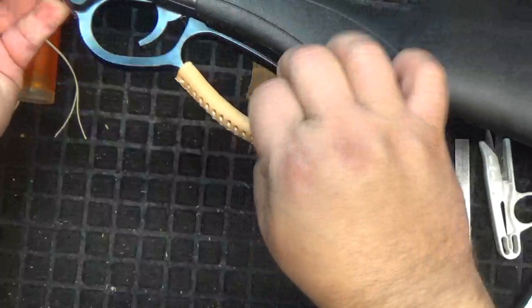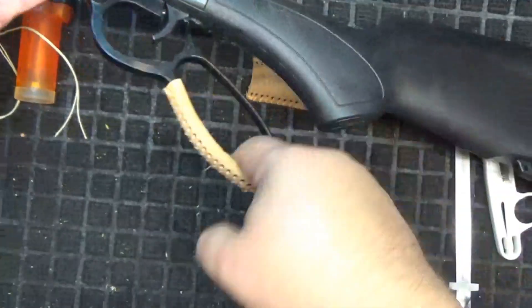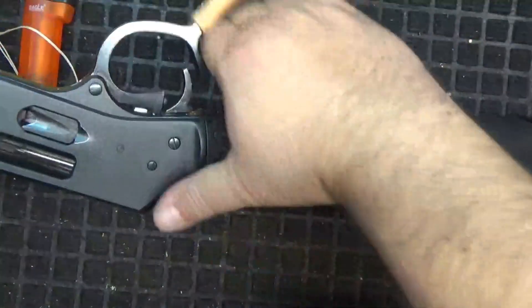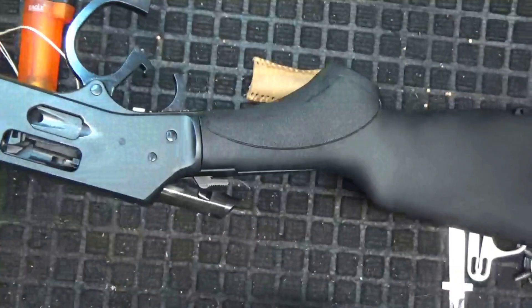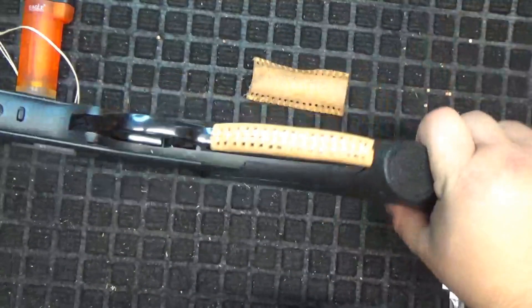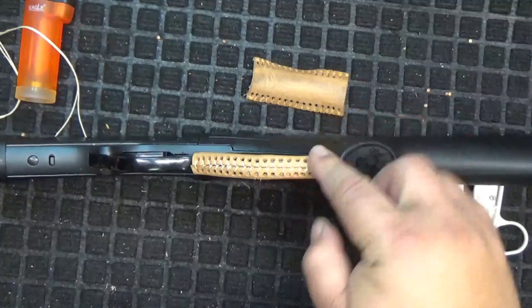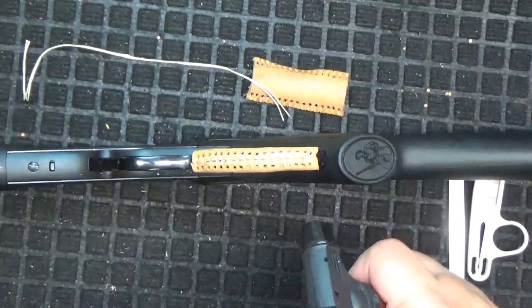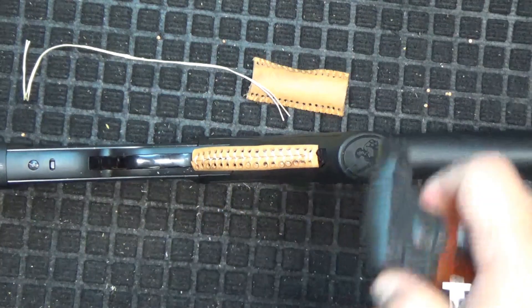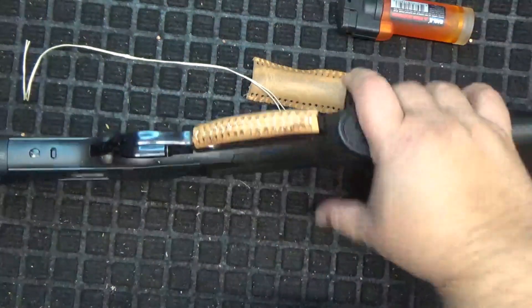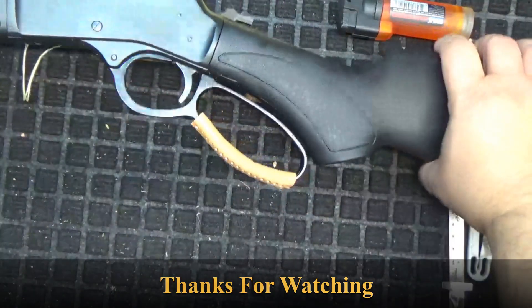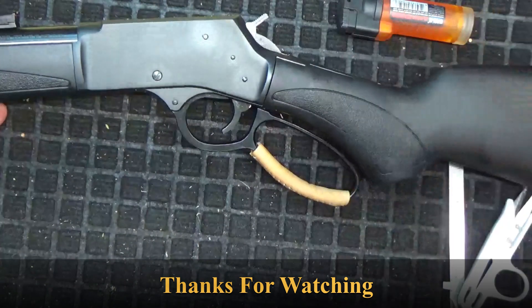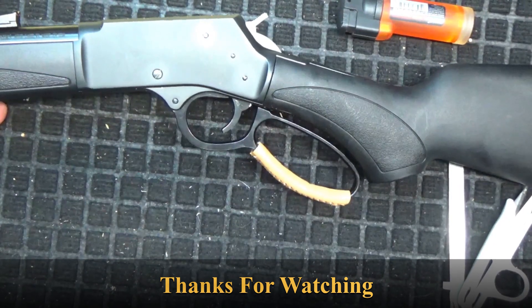There it is. Leather wrap lever action, protects the knuckles. Doesn't look bad. There's a little fuzzies here and there, so grab a lighter. And there you go. Let me know what you think.